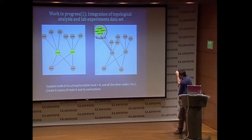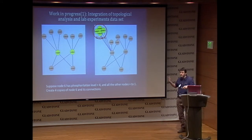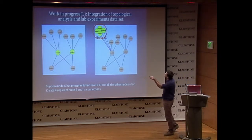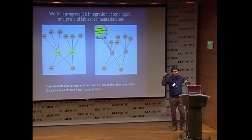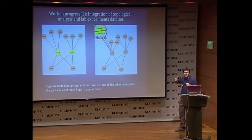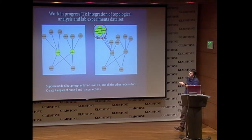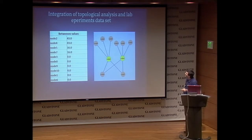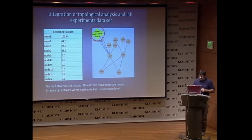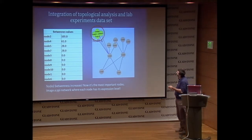The first work in progress: suppose sometimes you have a network but also you have phosphorylation levels from experiments. Suppose the phosphorylation level of node 6 is 4, while other proteins have a level of 1. You can transform your network by creating four copies of node 6. If you do this, the betweenness value of node 2 and node 4 changes. Now node 2 is more important, with a betweenness value of 100, because here we have more nodes to be connected.